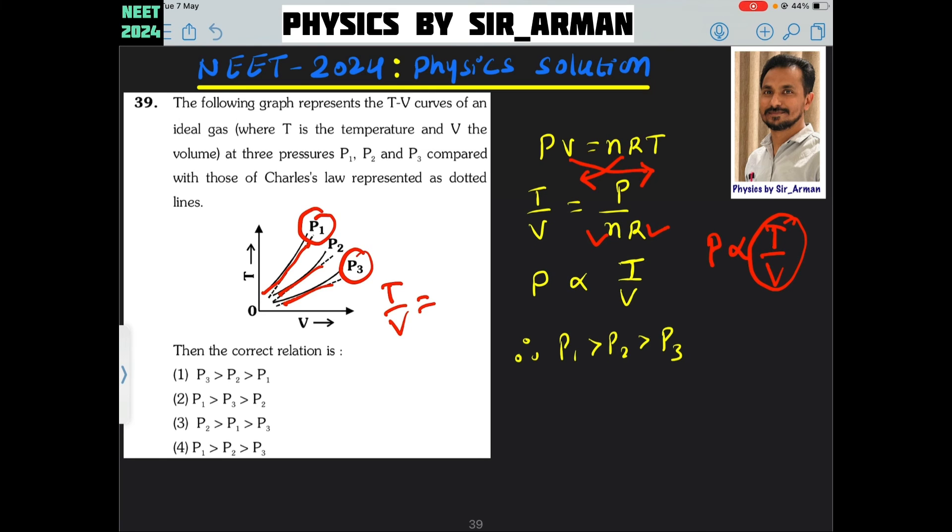P1 has the highest pressure and P3 has the lowest pressure. So P1 > P2 > P3. Option number 4 is the correct option.